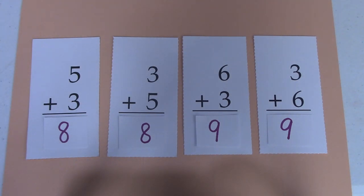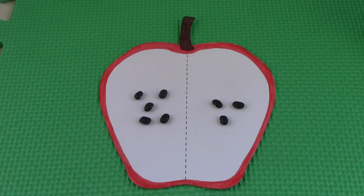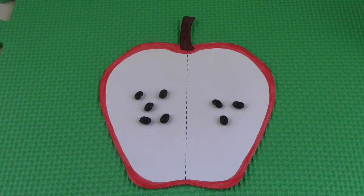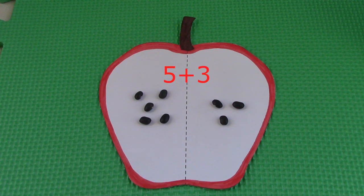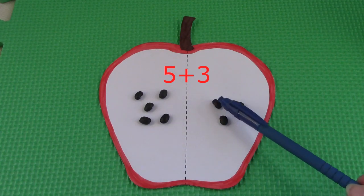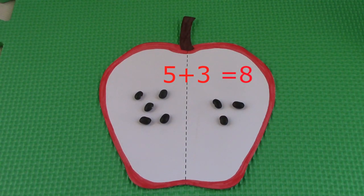Let's take a minute to look at this apple. It can help us learn this math fact. 5 plus 3. If we're not sure what 5 plus 3 is, we can use objects to help us count it out. We know that there's 5 on one side. So let's add on. We'll start with 5, 6, 7, 8. 5 plus 3 is 8.